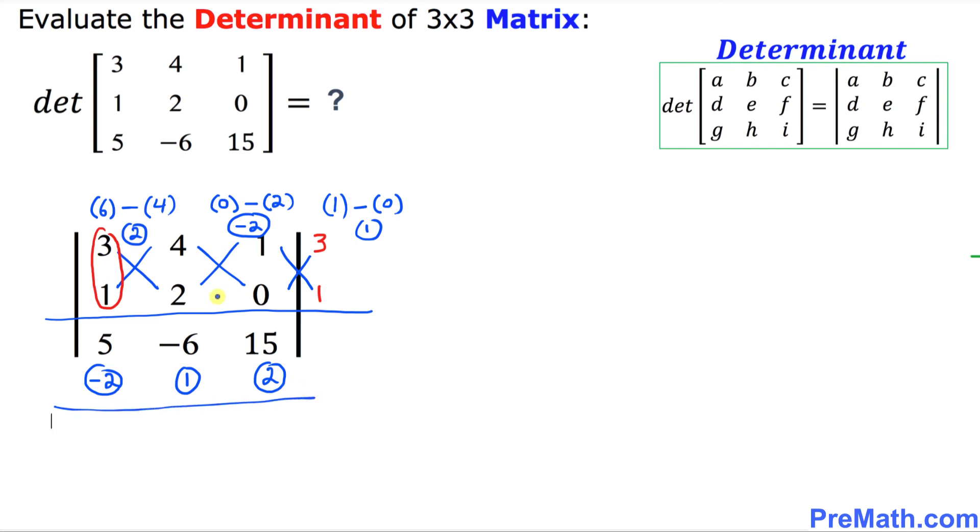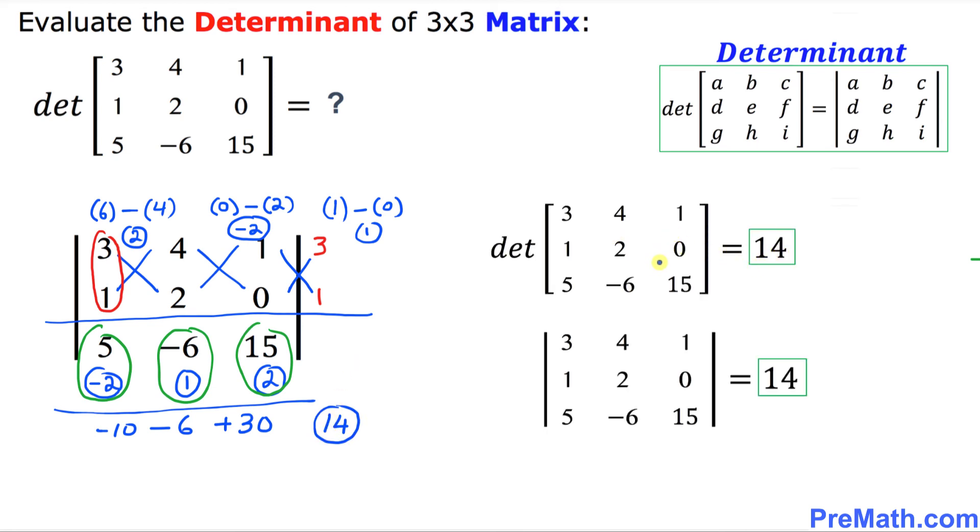Let's go ahead and multiply these numbers. Multiply this one and see what we get. This is going to give us negative 6 times 1 is negative 6. And this is going to be plus 2 times 15 is 30, minus 5 times negative 1 is negative 5. If you go ahead and calculate that's going to give us 14. Thus our answer is 14.